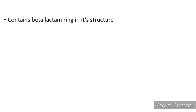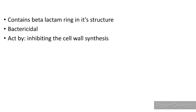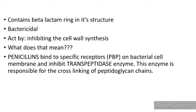Penicillin contains a beta-lactam ring in its structure. It is bactericidal and acts by inhibiting cell wall synthesis. Penicillins bind to specific receptors on the bacterial cell membrane and inhibit the transpeptidase enzyme. Remember this transpeptidase enzyme — it is responsible for the cross-linking of peptidoglycan chains.